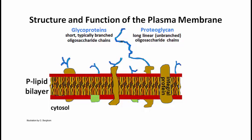The cells are sugar coated — covalently bound oligosaccharides, shown in this illustration as blue structures. We have proteins embedded in the membrane, and sugars covalently attached on the external surface, from the outside of the cell. We refer to this sugar-coated cell surface as the glycocalyx.